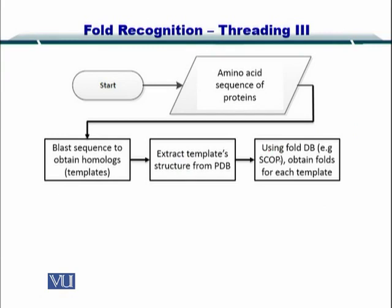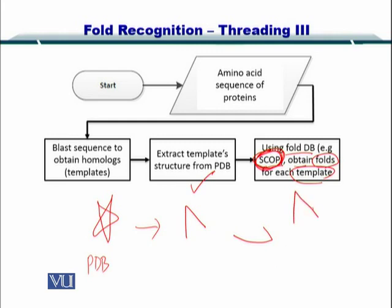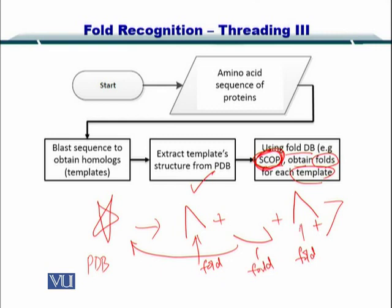After this, you go to the fold database, such as SCOP, to obtain the folds for each template. If you had a structure for a protein and obtained it in the previous step, you then go to the SCOP database and obtain the various folds that combine to give you that complete structure. Each one of them is a fold, and now you can individually deal with these folds.